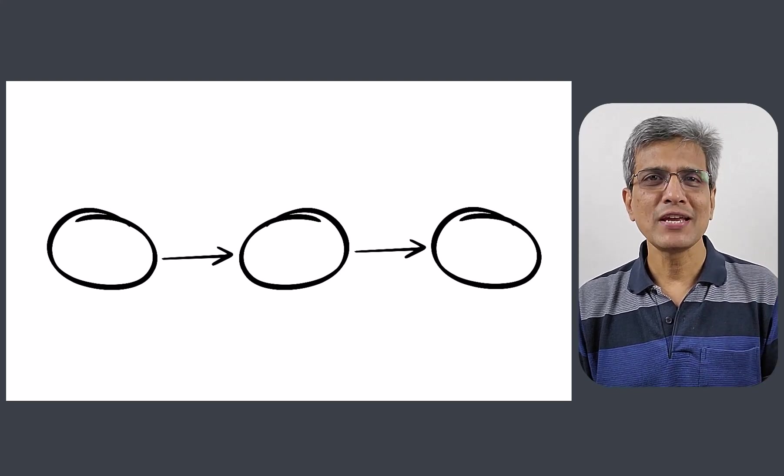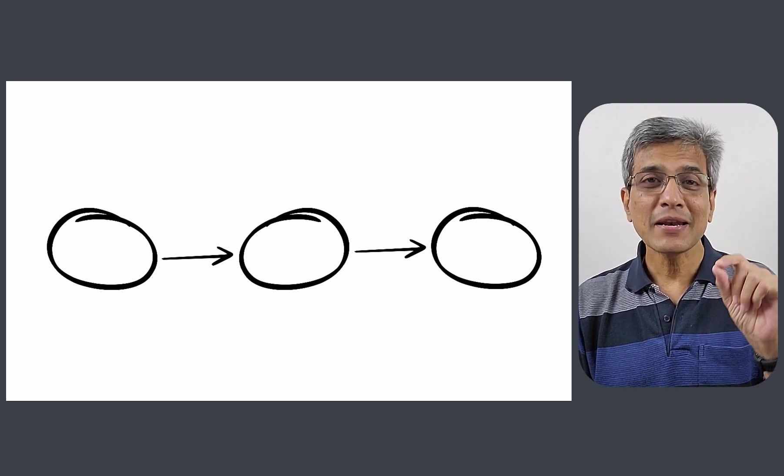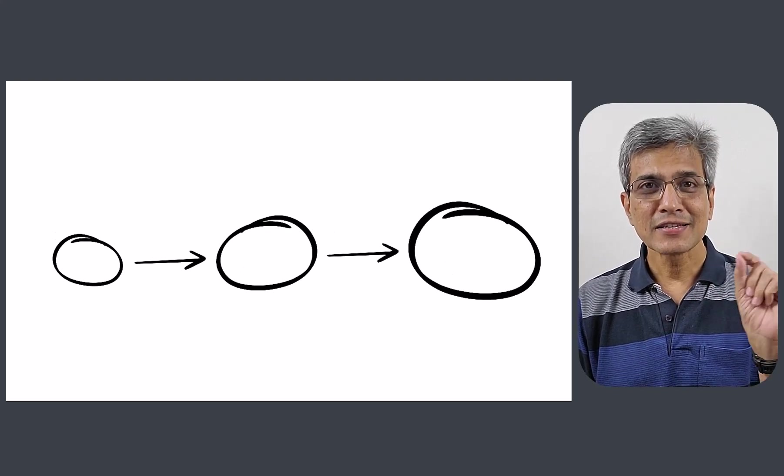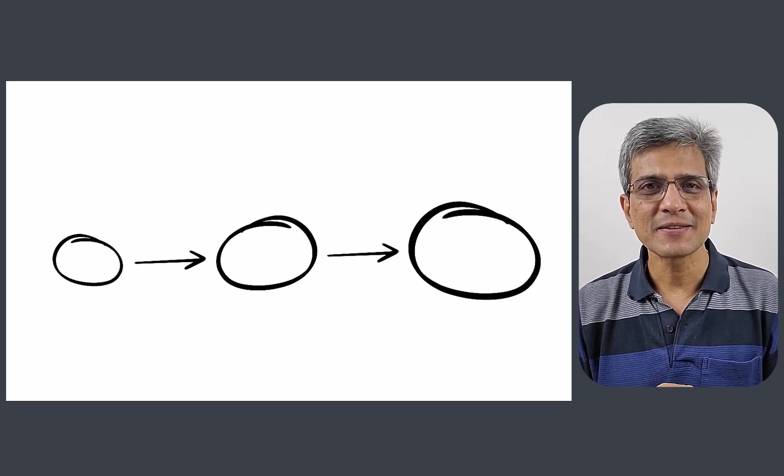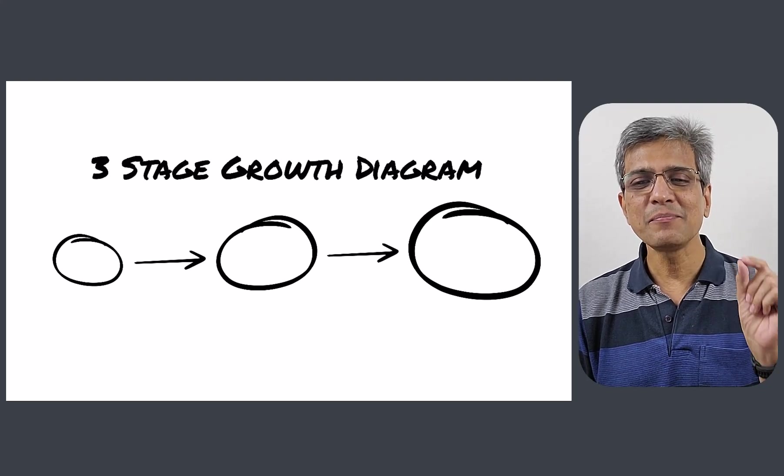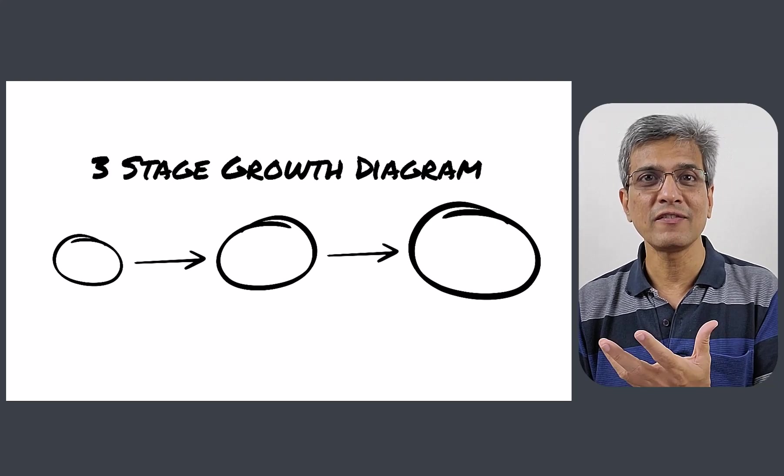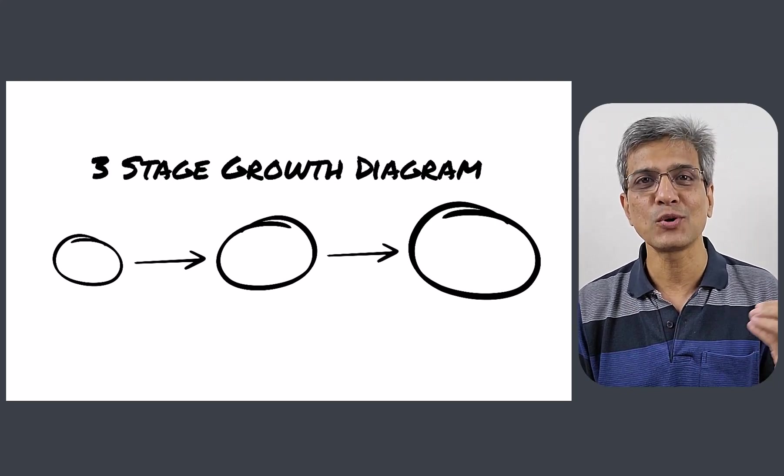Now, let us go back to the same three circle diagram. But this time, let us play with the size of those circles. Take a look at this. The circles are growing in size. This can be a simple three-stage growth diagram. This can represent growth in revenues, growth in number of employees, growth in number of branches.